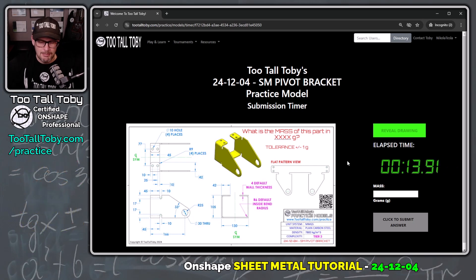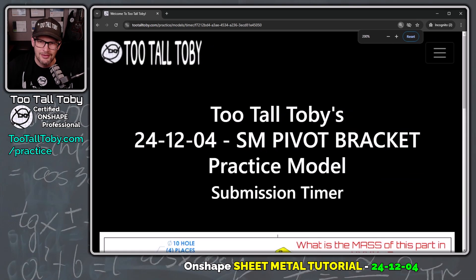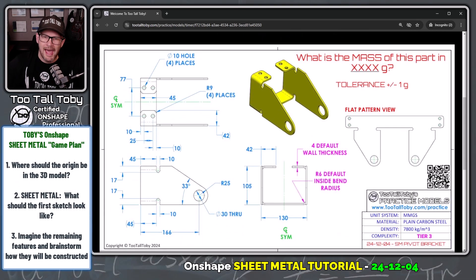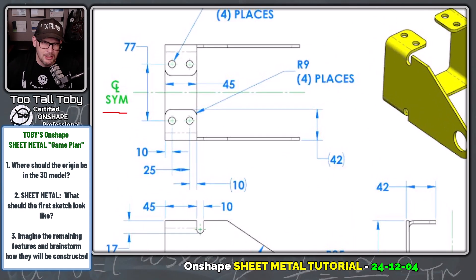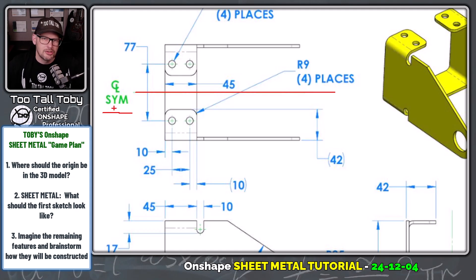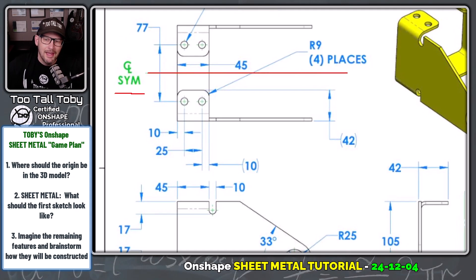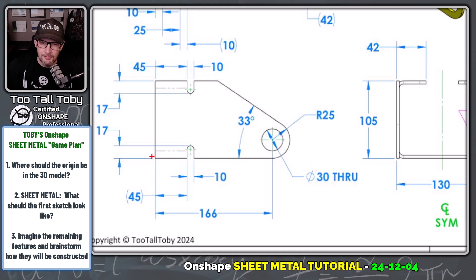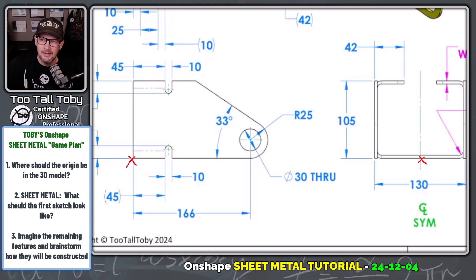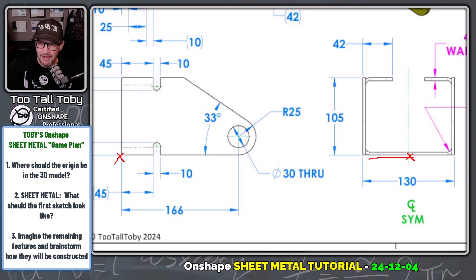Before we get started, I think it's always good to come up with a game plan. Anytime you're going from 2D to 3D, one of the first things you ask is: where should the origin be in the 3D model? One of the first things you can look for is whether the model has symmetry. Here we see the center line symmetric indicator, so the model has symmetry along this line, meaning the origin should probably be somewhere along that line. Then look for a spot where there's a lot of dimensions coming together — I think we can identify that spot in both the front view and the side view. Since the model is symmetric, we don't have to model the whole thing — we could just model half of it.